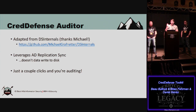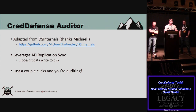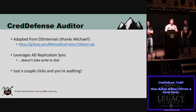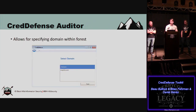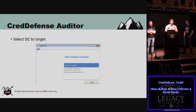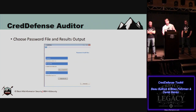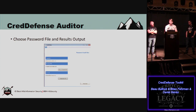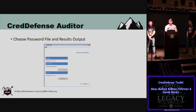This is an adaptation of DS Internals by Michael Grafnetter from Czech Republic. It basically leverages the AD replication sync feature, but it isn't writing any of the data to disk. Within the toolkit, just a couple clicks and you're off and running. You pop up this interface, select the password auditing feature, and you'll get a list of all the domains within your forest. If you want to perform it on a different domain, you can potentially do that. Then select your target domain controller and your password file for cracking — in this example, the RockYou list, though the stats will show the human-readable CrackStation list.